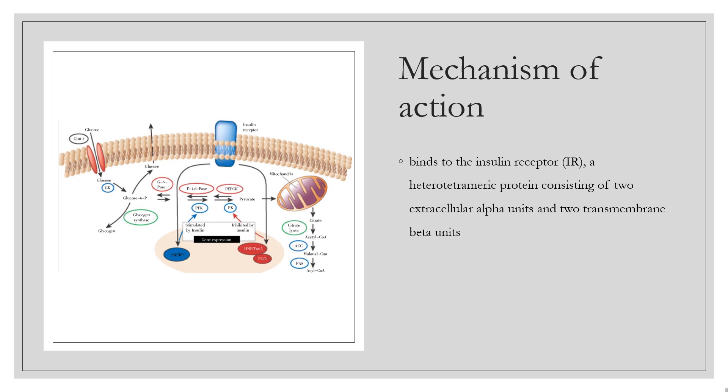The bound receptor autophosphorylates and phosphorylates numerous intracellular substrates such as insulin receptor substrates (IRS) proteins, CBL, APS, SHC, and GAB1. Activation of these proteins leads to the activation of downstream signaling molecules including PI3-kinase and AKT.